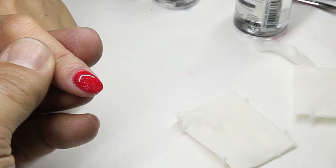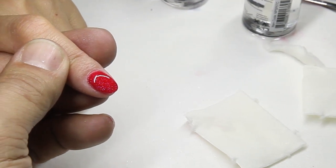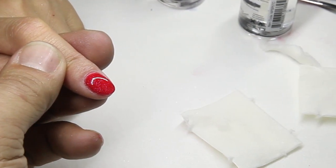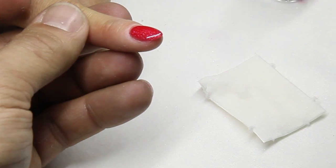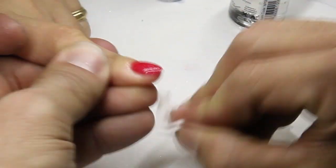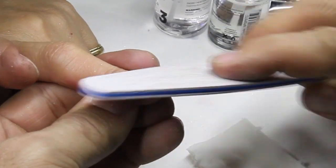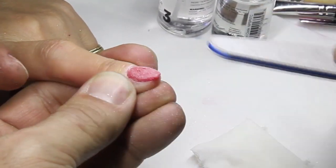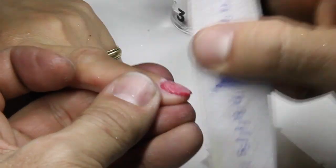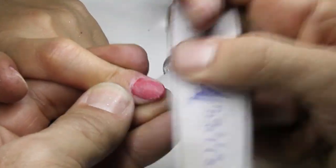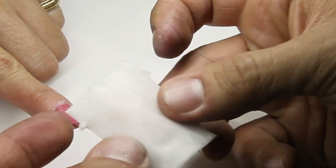Pretty cool, huh? See the shine? It looks like gel. Now let me show you how to remove it. I need to break the seal.